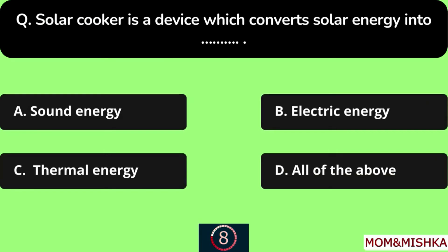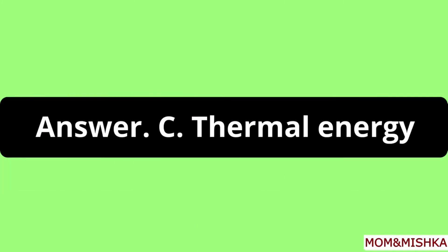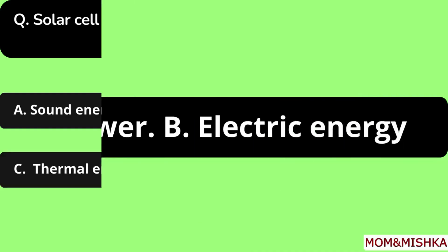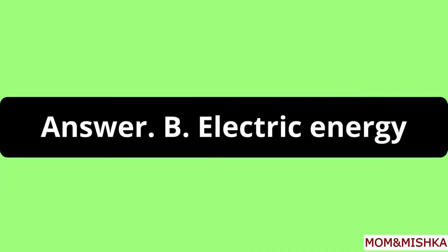Solar cooker is a device which converts solar energy into thermal energy, Option C. Solar cell is a device which converts solar energy into electric energy, Option B.